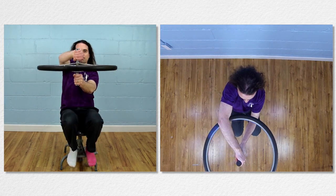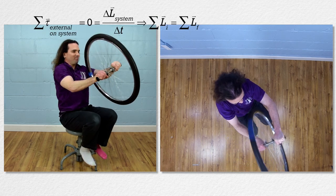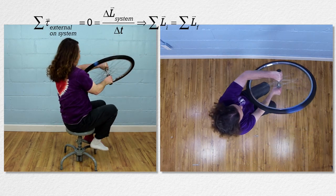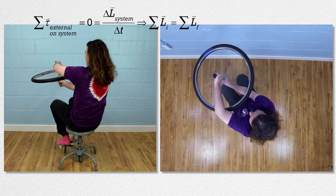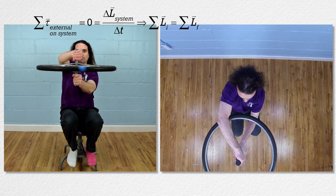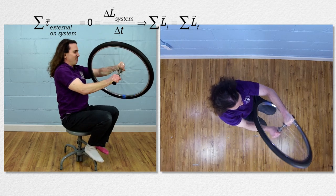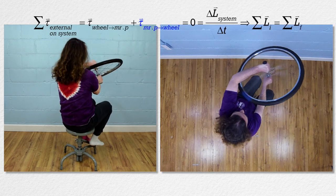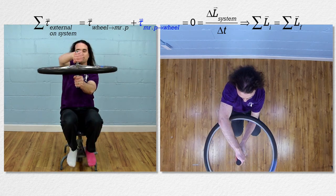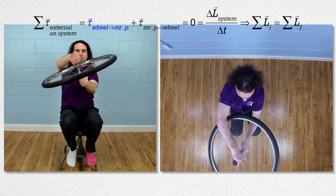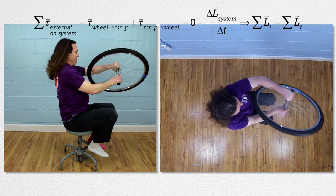Now realize, the angular momentum of the system is still conserved because the two torques, which are equal and opposite, will cancel one another out and result in a net torque on the system of zero. In other words, both of these two torques — the torque I apply to the wheel and the equal but opposite torque the wheel applies on me — are internal to the person, chair, and wheel system.